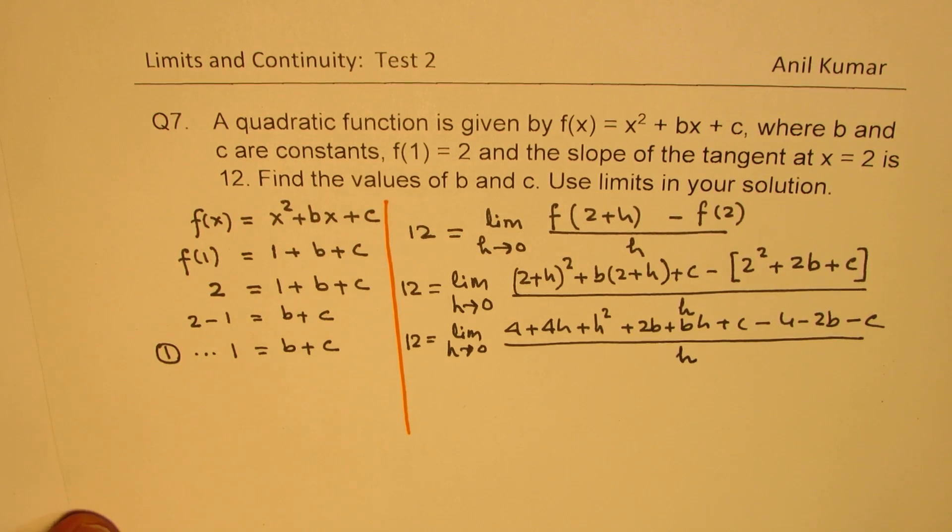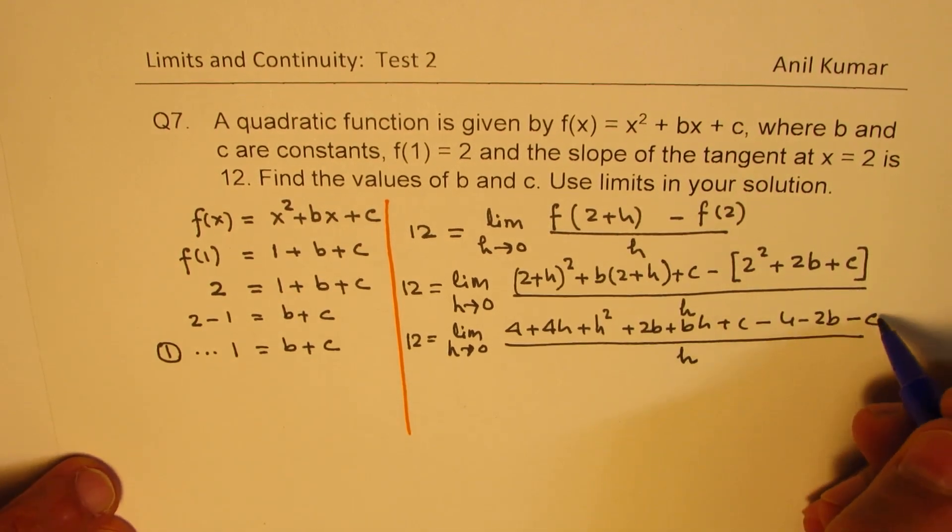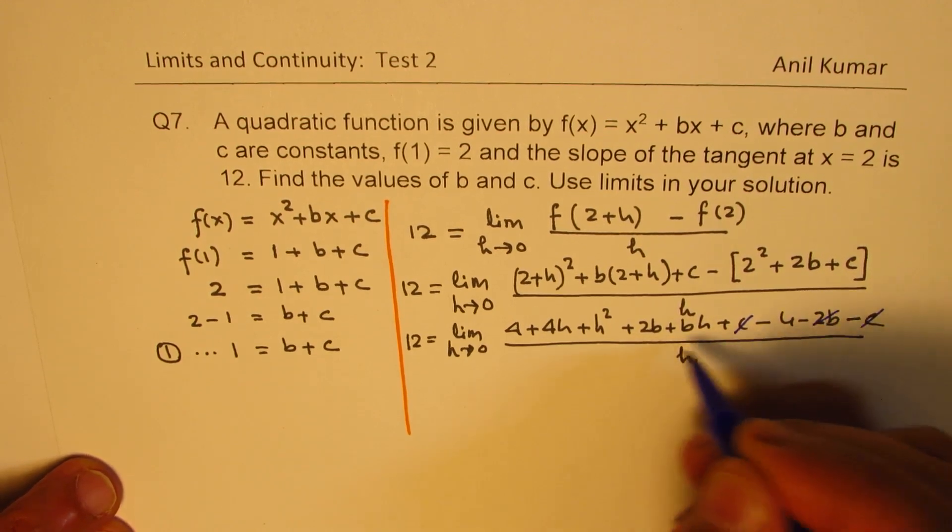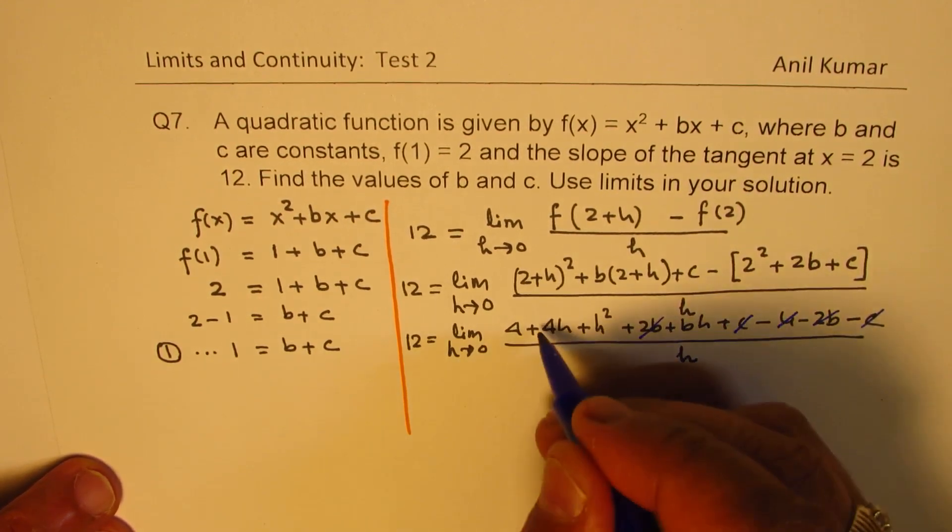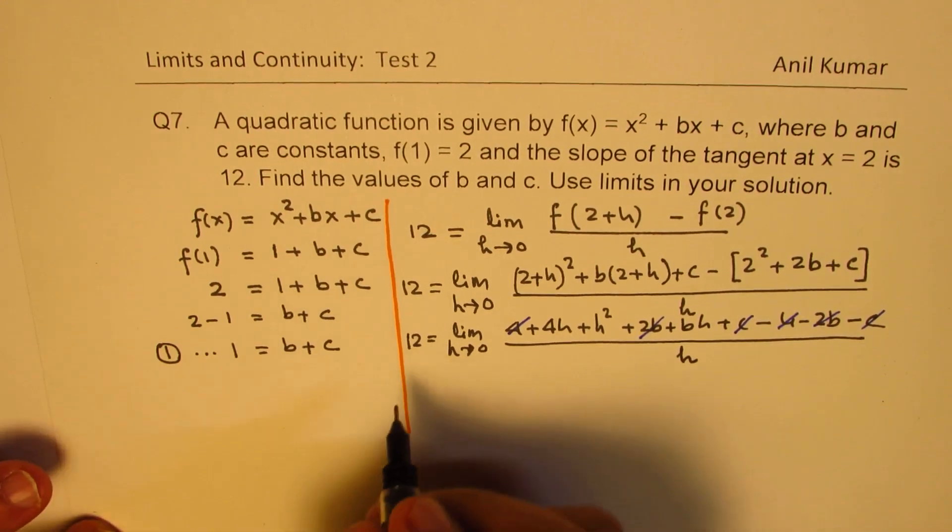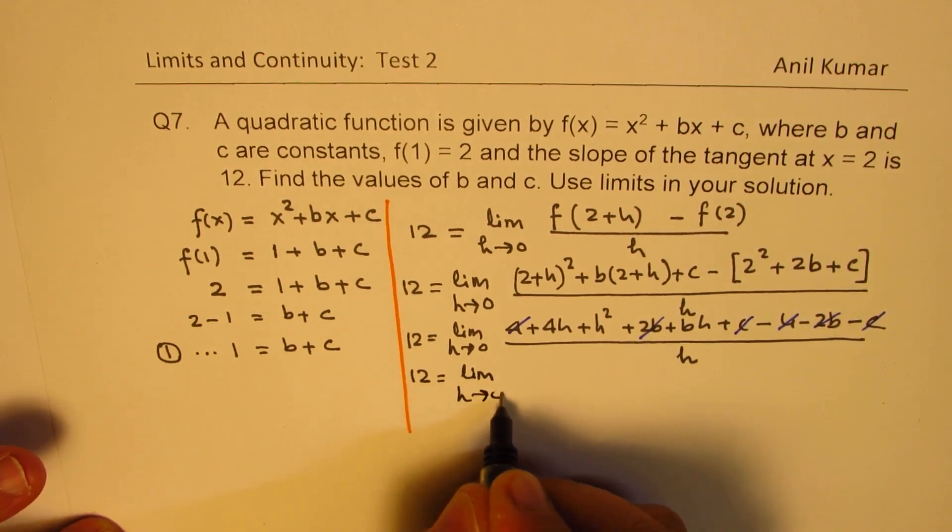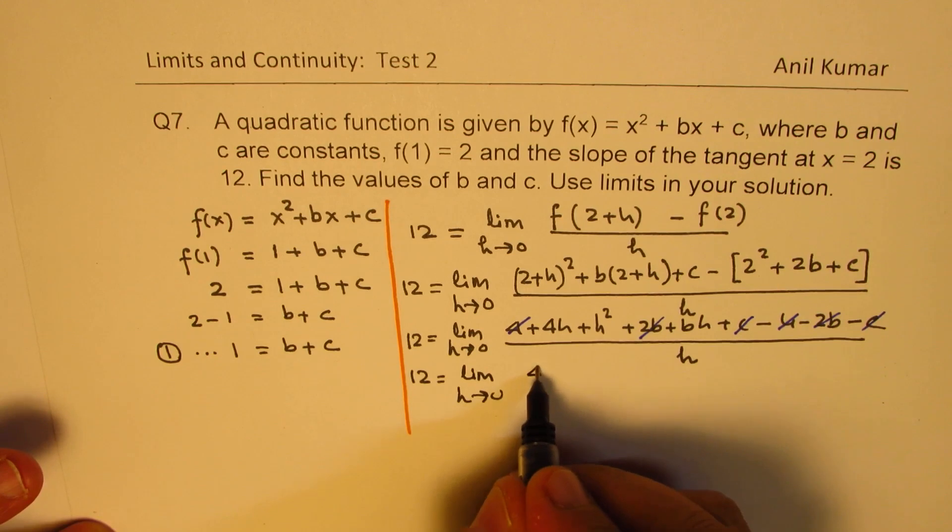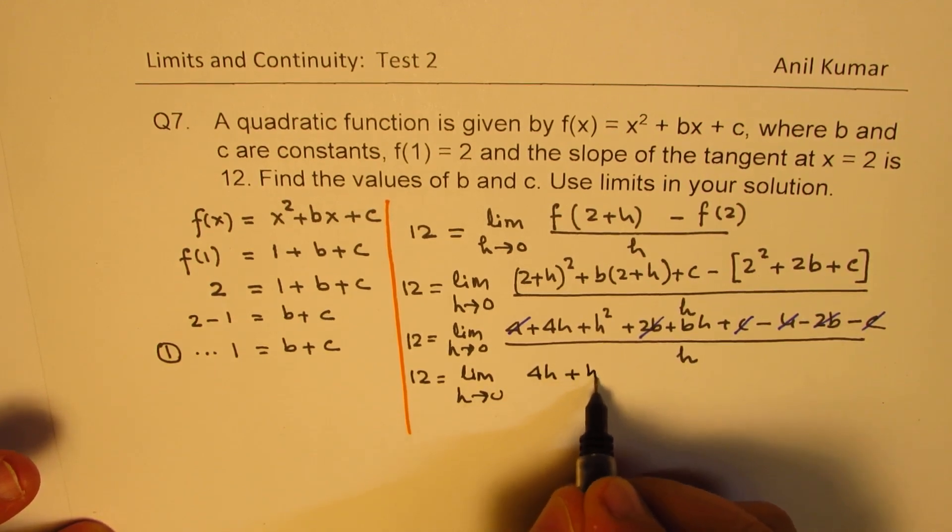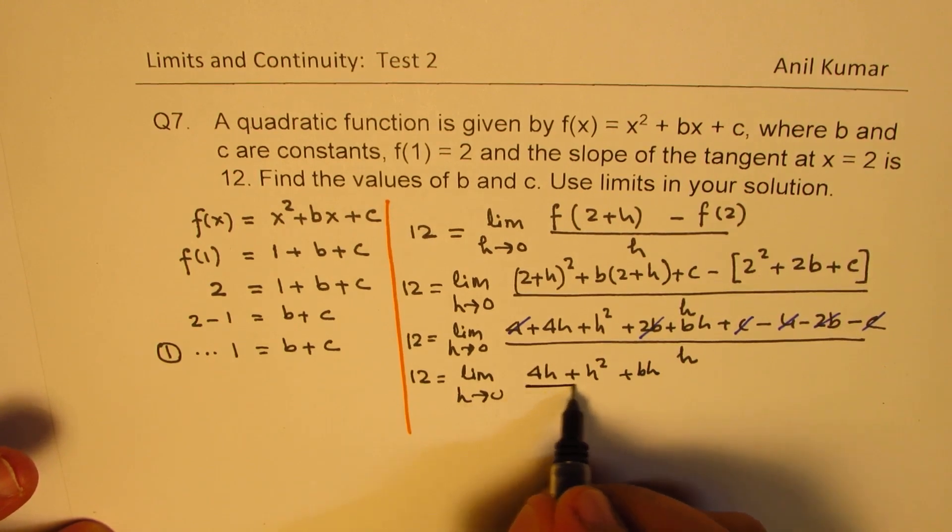So these three terms will always cancel. So let's cancel them first. 4 with 4, 2b with 2b, c with c. So you are left with terms which have h in it. So we have limit h approaches 0: [4h + h² + bh]/h.